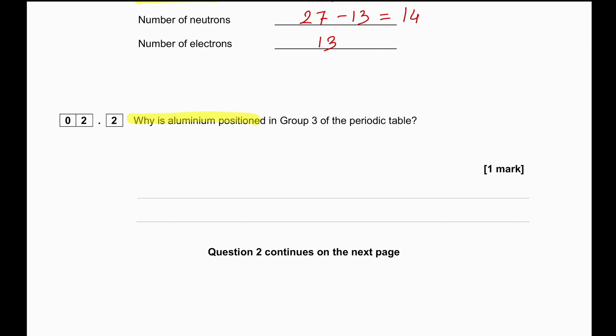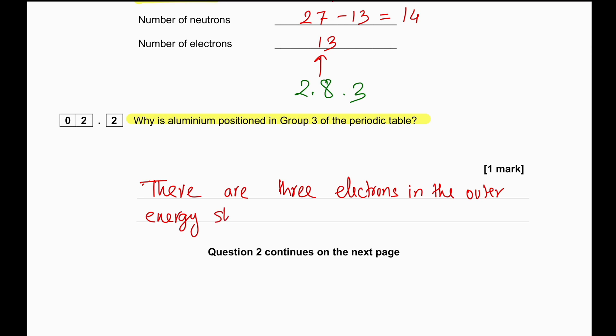Why is aluminium positioned in group 3 of the periodic table? If we take aluminium's 13 electrons and write the electron configuration, it becomes 2, 8, 3 — which means there are three electrons in the outer energy shell. So the answer is: there are three electrons in the outer energy shell.